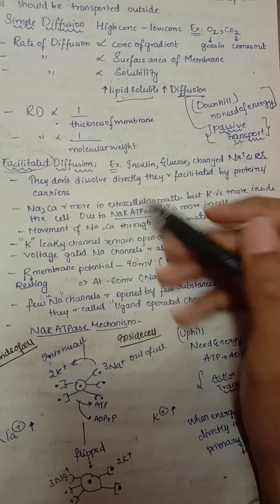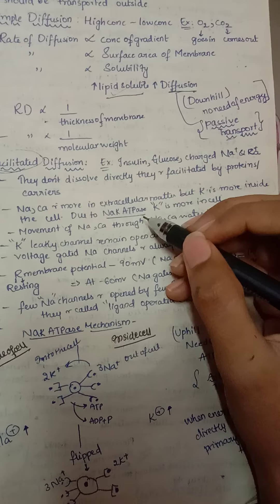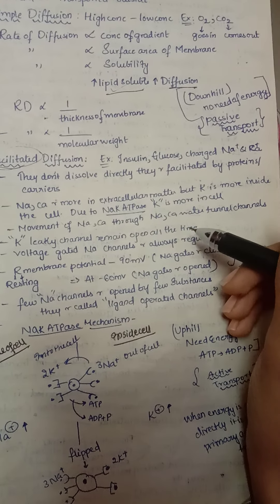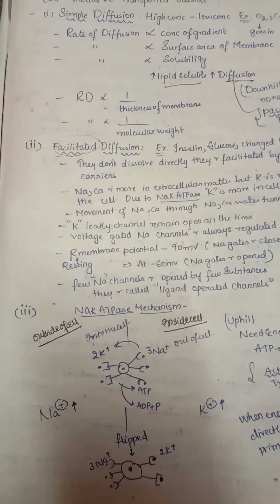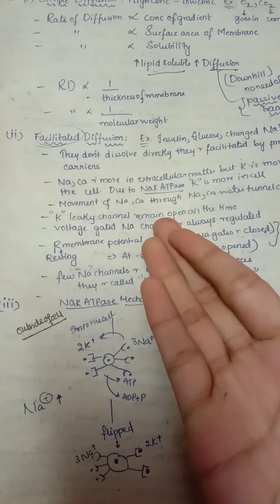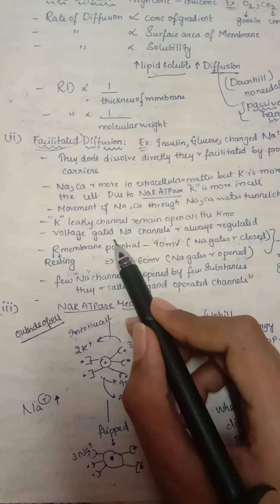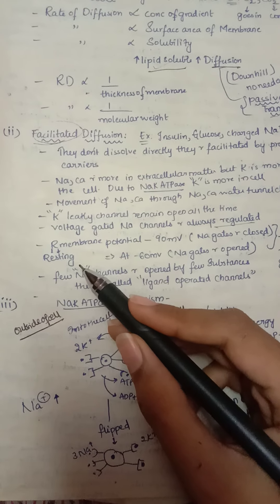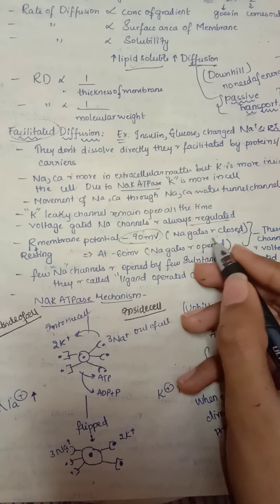Sodium and calcium are more concentrated extracellularly, while potassium is more inside the cell due to the sodium-potassium ATPase pump, which sends three sodium outside and two potassium inside. Movement of sodium and calcium through tunnel channels is possible. Potassium has two types of channels: a leaky channel, which is always open, and a voltage-gated channel, which is regulated.